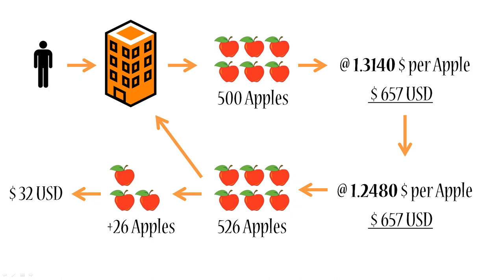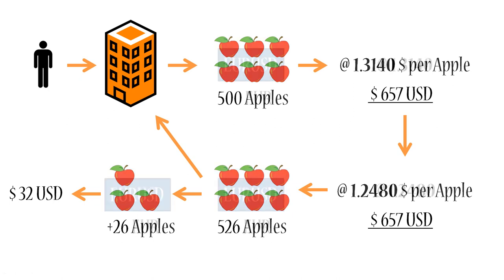Now if we replace apples with euros, as we did previously, you will see that nothing changes — this whole scheme works for euros just as it did for apples. You go to your broker, you borrow 500 euros, you sell them at 1.3140 for 657 US dollars. You hold on to your 657 US dollars until the price for euros drops. You use those 657 dollars to buy back euros at the new lower price of 1.2480. You get 526 euros in return, you return 500 euros to your broker, your profit is 26 euros. Because your account is in US dollars, you convert your euros back into US dollars, and you have 32 US dollars of profit.